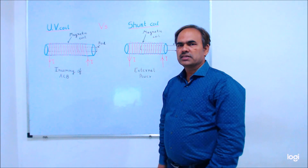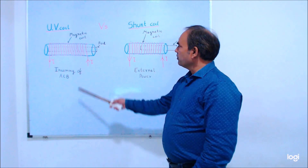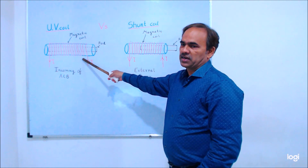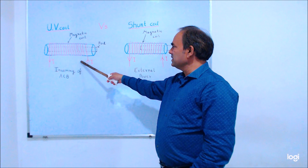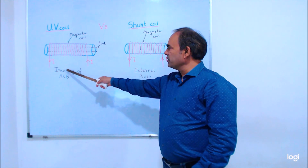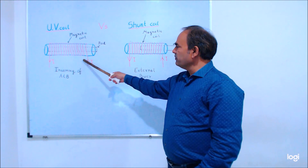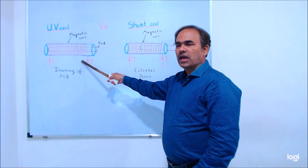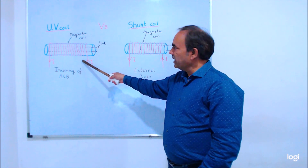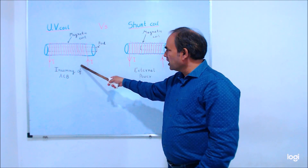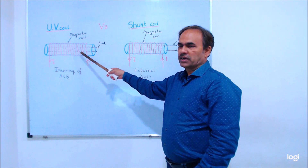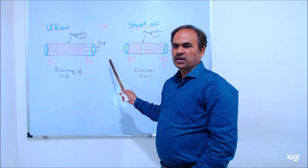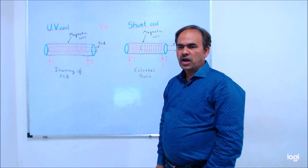One more difference: when the UV coil is de-energized — meaning the incoming supply is not available — we cannot close the circuit breaker. Similarly, when it is defective, we cannot close the circuit breaker. So it provides an interlock for the circuit breaker, acting as a safety feature.